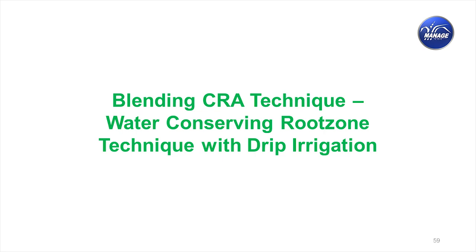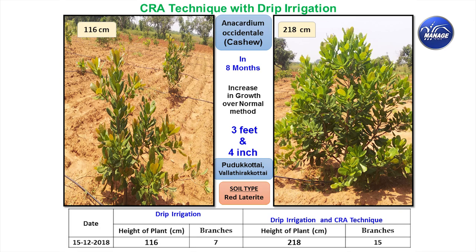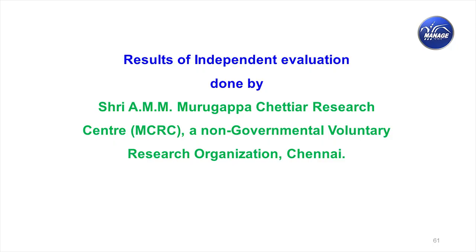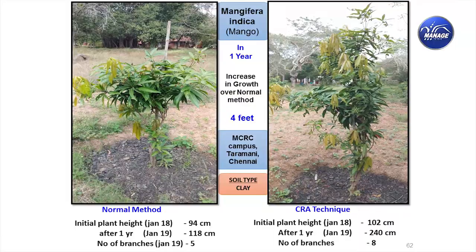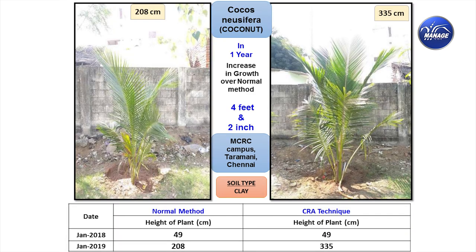Visual comparison of the blending experiment: the left side shows drip irrigation only, the right side shows the blended method. The canopy, number of leaves, and overall growth are phenomenally higher on the blended side. This data was gathered from officers working directly under me. Independent evaluation by the Murugappa Chettiar Research Trust found: mango — 4 feet difference in one year; coconut — 4 feet 2 inches in one year; white teak (Kumil) — about 14 feet difference.